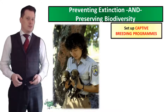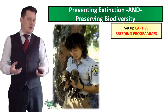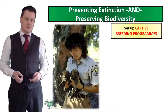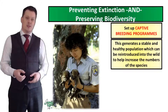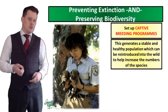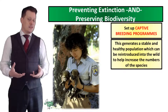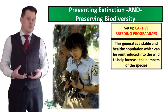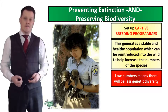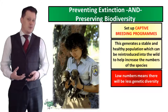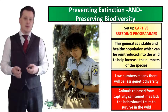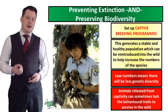We can also set up captive breeding programmes, where we take animals out of their natural environment and breed them in controlled conditions. This generates a stable and healthy population which can then be reintroduced into the wild to help increase numbers and ensure their survival. However, this only happens when numbers are quite low, which means there will be less genetic diversity, and because the animals were bred in captivity, when released into the wild they sometimes lack the behavioural traits needed to survive.